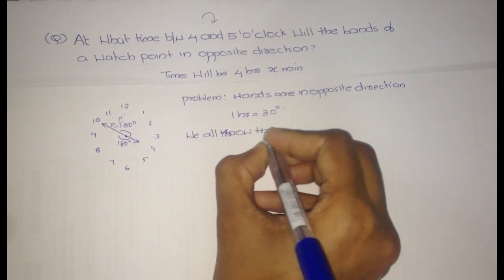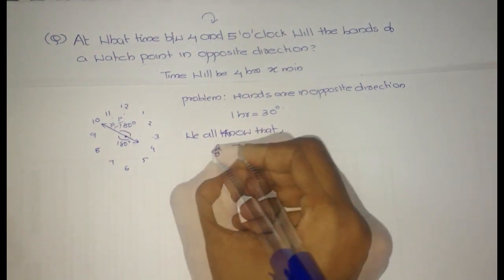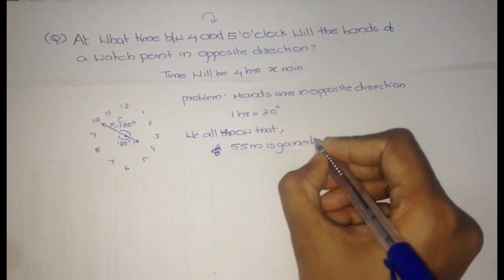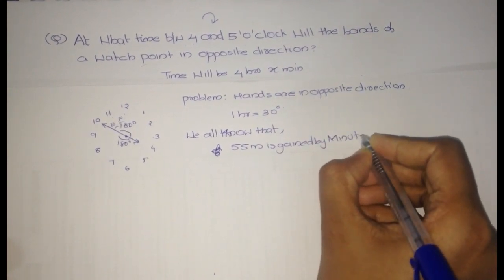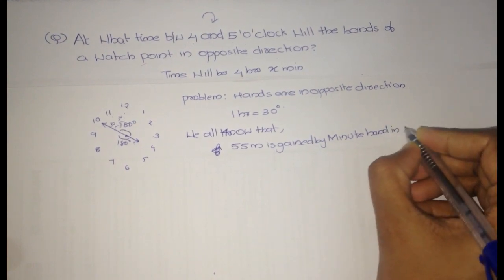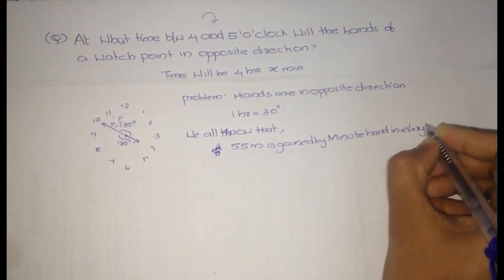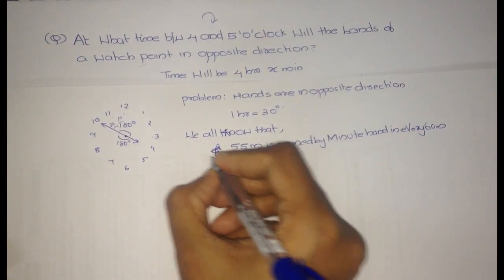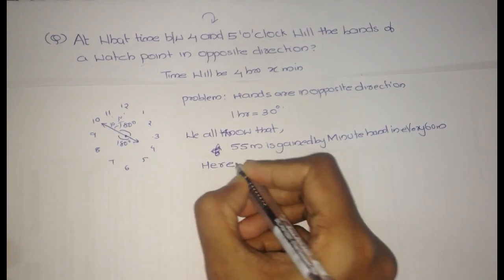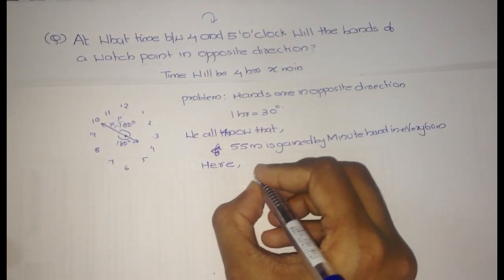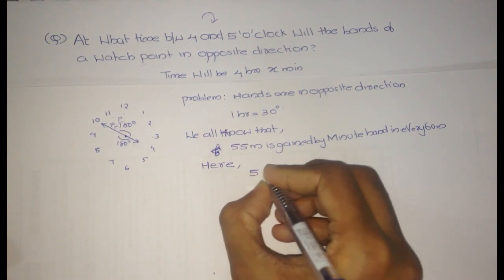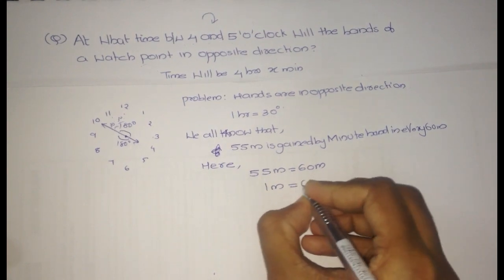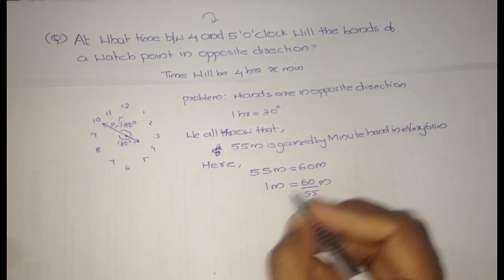We all know that 5 minutes is gained by the minute hand in every 60 minutes. We can write it like this: 55 minutes equals 16 minutes, then 1 minute will be 16 divided by 55 minutes.